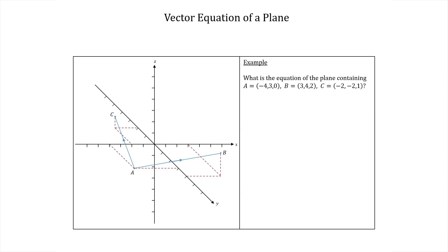This has as its first component 3 - (-4). That's the first coordinate of b subtract the first coordinate of a. Then similarly for the other two components we get 4 - 3 and 2 - 0. This equals (7,1,2).